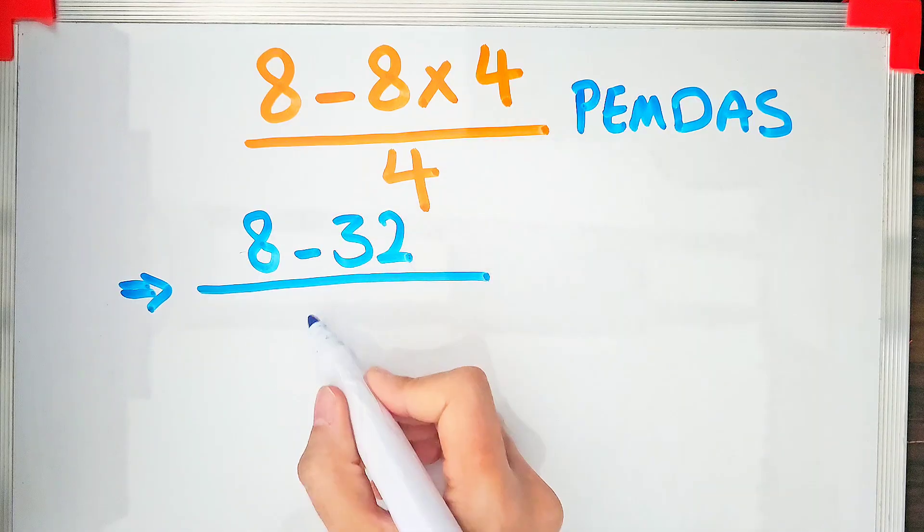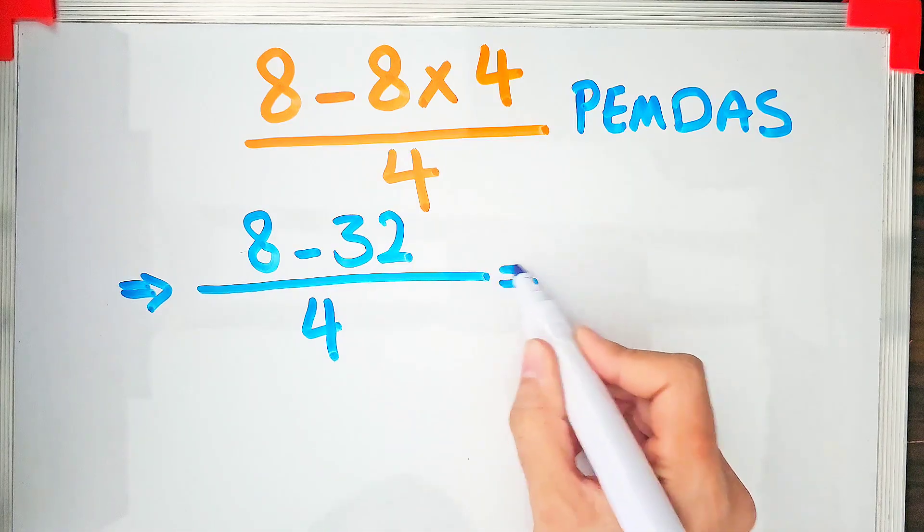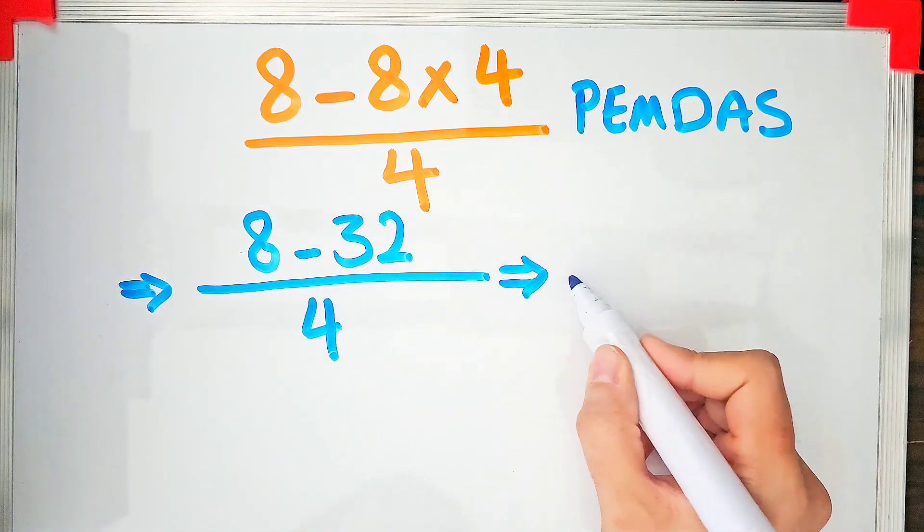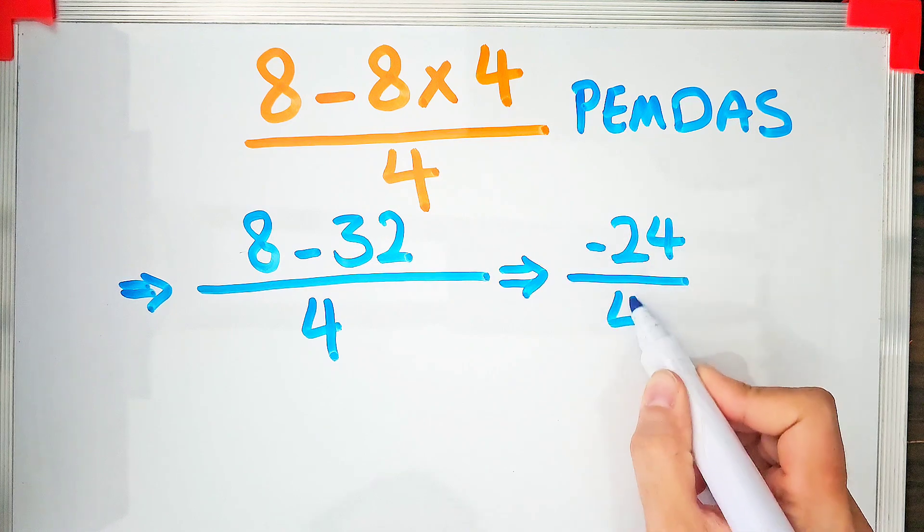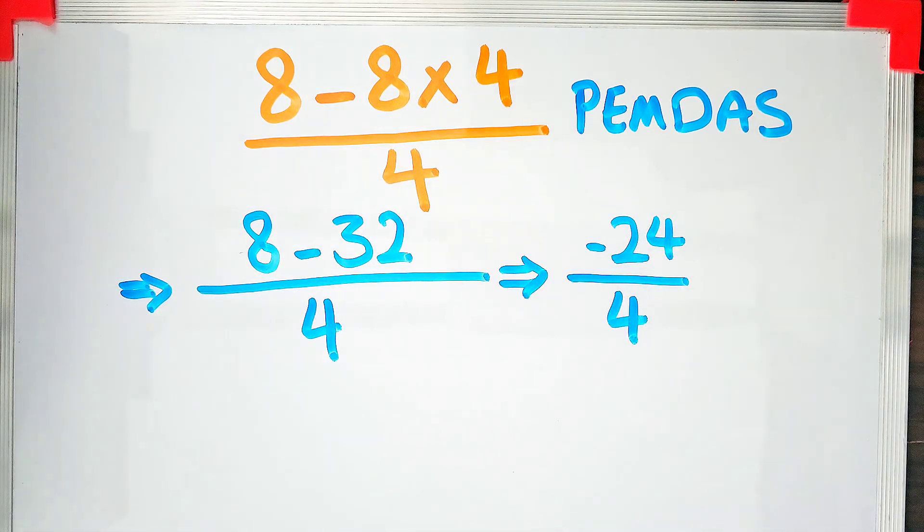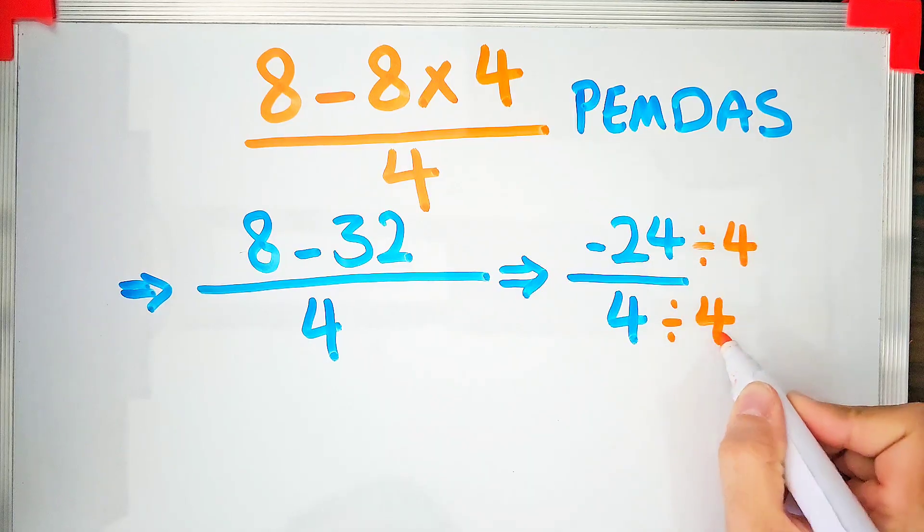After that we simplify the question. Now in the numerator we have negative 24, and in the denominator we have 4. Both numbers are divisible by 4, so we divide both by 4 and simplify the question.